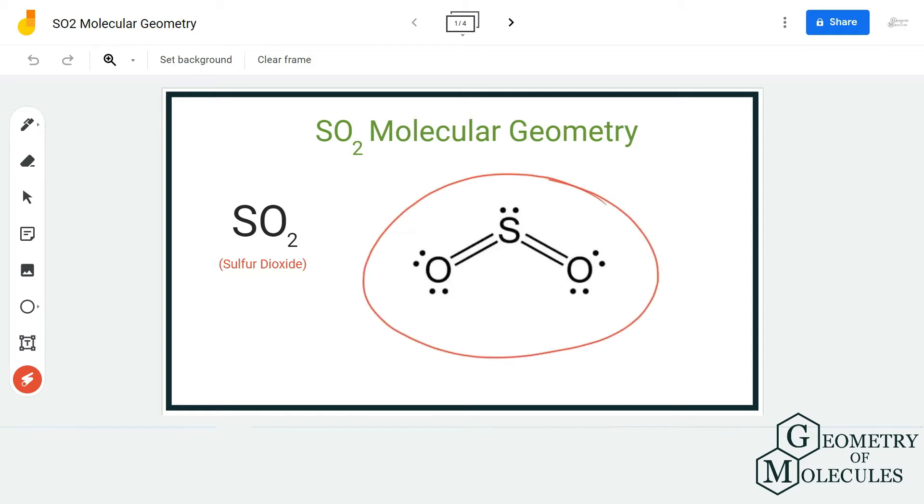This is the Lewis structure of SO2, with sulfur atom forming double bonds with two oxygen atoms. Apart from that, there is a lone pair of electrons on the sulfur atom.